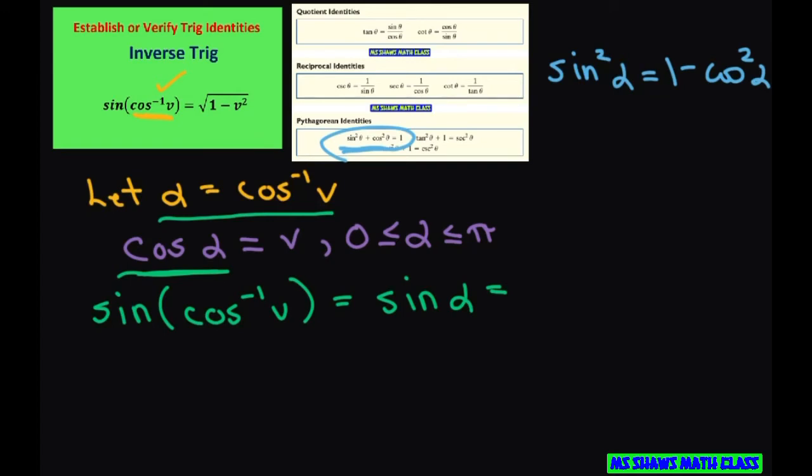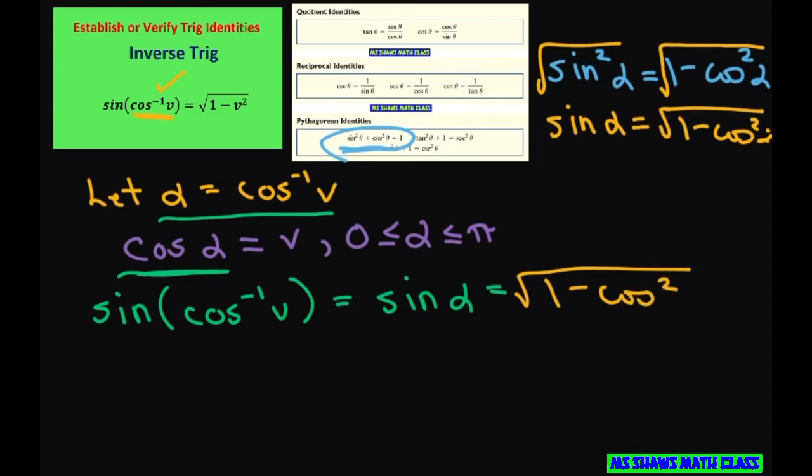Since we only have sine, just square root both sides. So you get sine of alpha equals square root of 1 minus cosine squared of alpha. So let's write that here: 1 minus cosine squared of alpha.